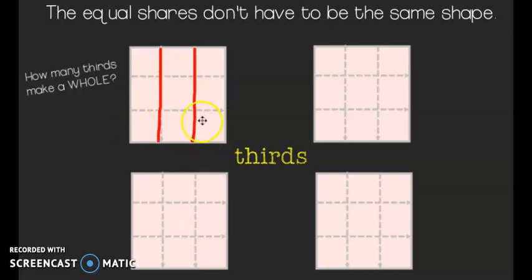So I divided this square up into three parts, or thirds, and they are all equal parts. Here's another example. Now my lines go this way. We've got three equal parts, so it's in thirds.